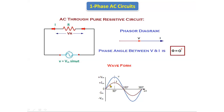The negative half cycle is starting from 180 degrees — both are starting from 180 degrees only, there is no phase difference between voltage and current. The negative half cycle is ending at 360 degrees for both voltage and current. So we can say that there is no phase difference between voltage and current of a pure resistive circuit, and phi is equal to zero.